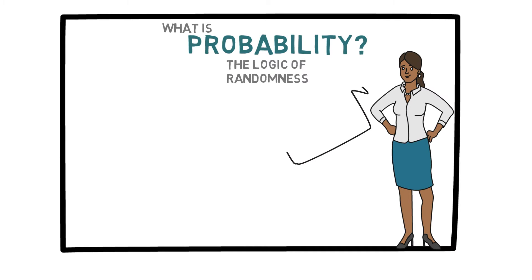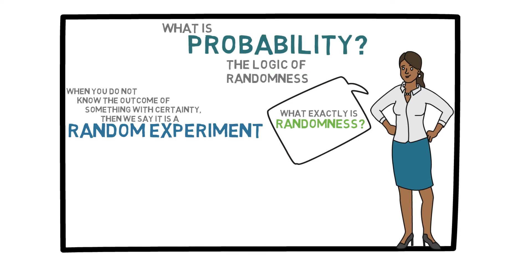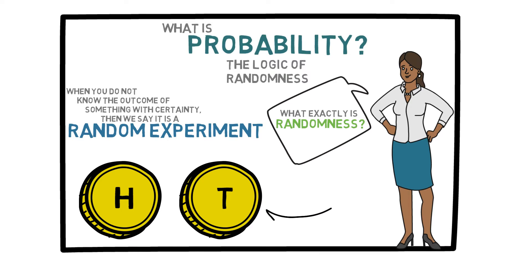Now you might be asking, what is randomness? I could try to give you a very philosophical definition, but since here we are only interested in practical implications, I can simply define randomness in the following way. Whenever you do an experiment in which you cannot predict the outcome with certainty, you have a random experiment. For example, when you toss a coin, the outcome could be either heads or tails — you do not know which one beforehand, so it is random.